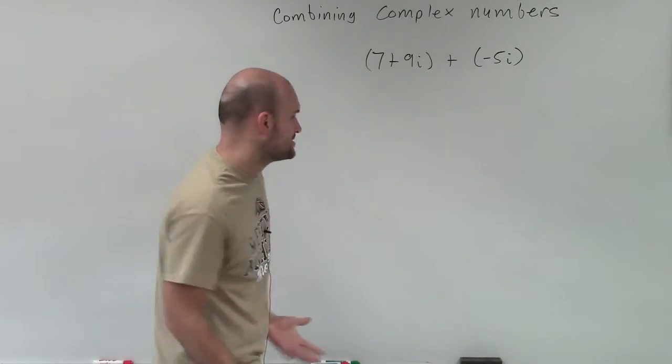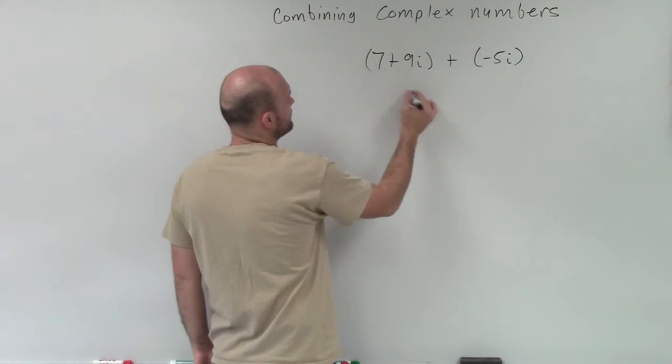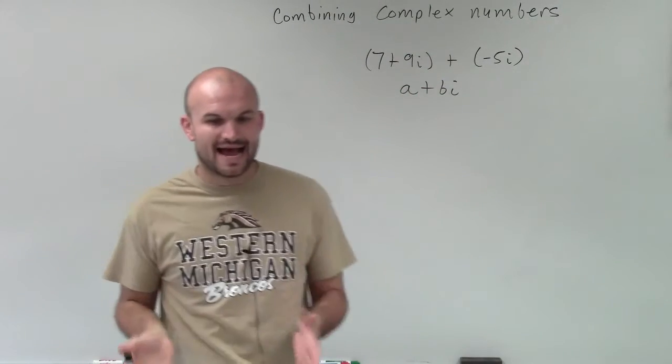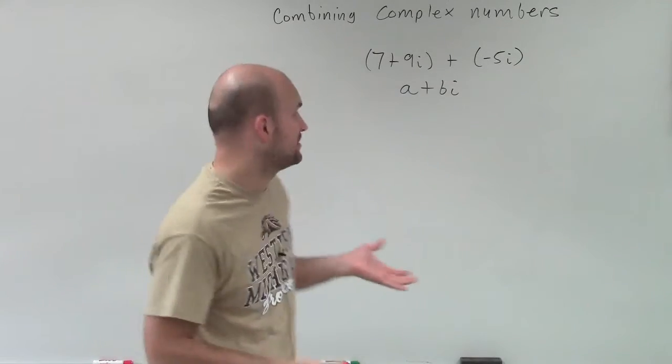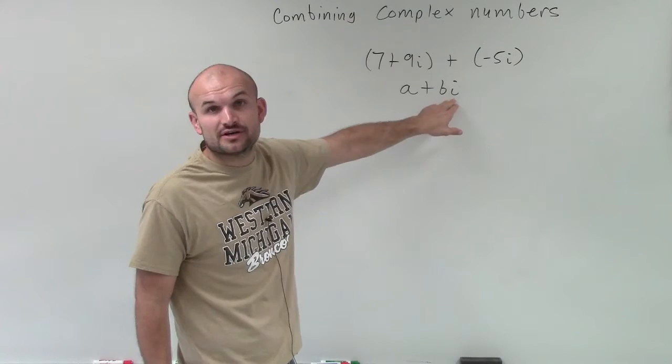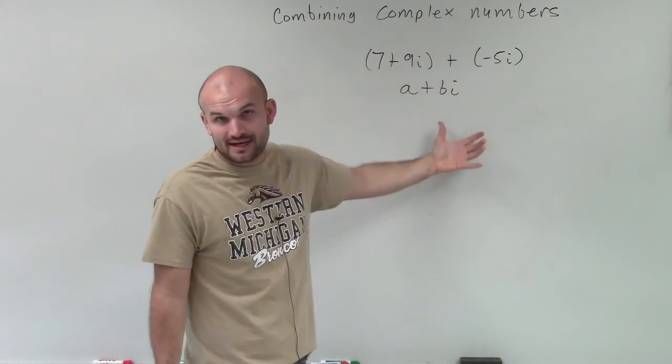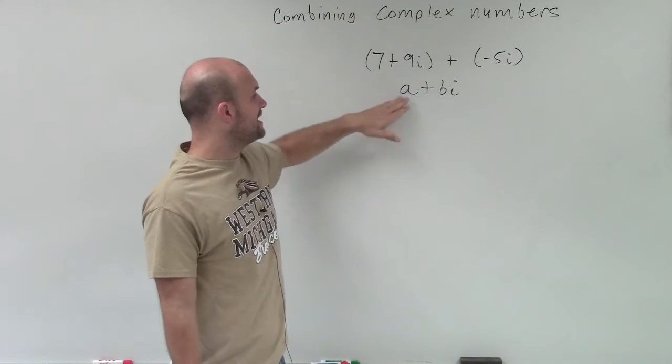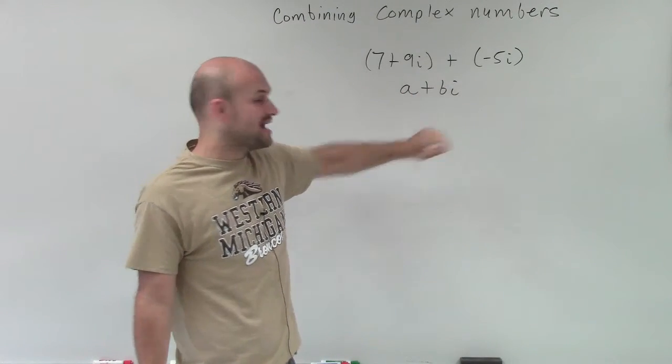So when adding complex numbers, remember that complex numbers come in the form of a plus bi. I can only add my real version. Remember, a and b are real numbers. And this is our real number, and this is our imaginary number that combine to make a complex number. When combining complex numbers, we can only combine the reals and the imaginaries.